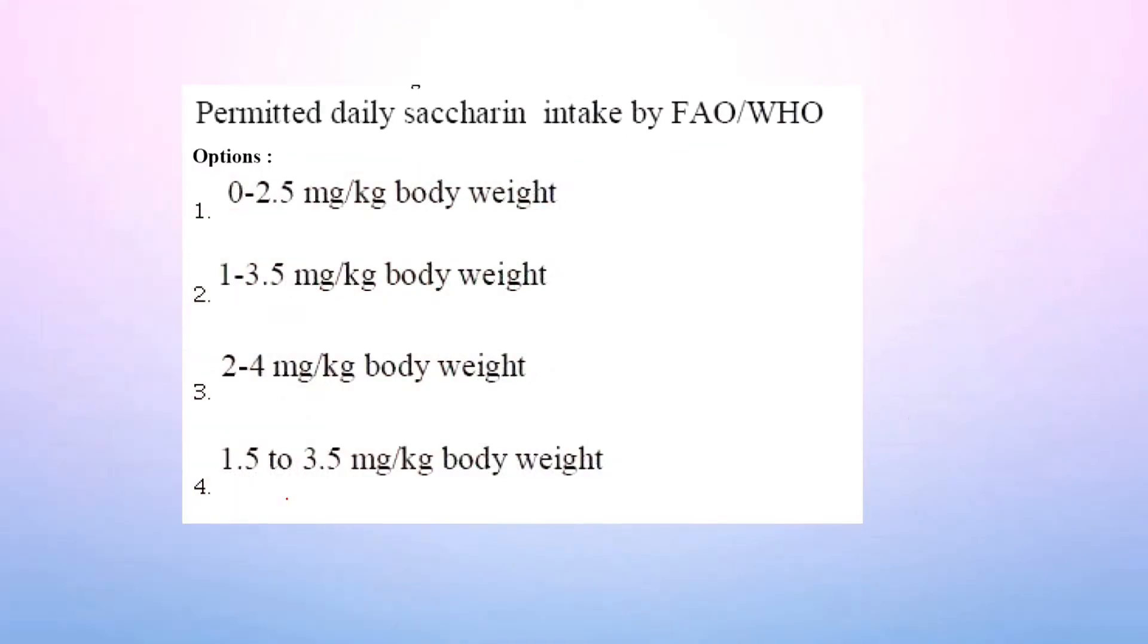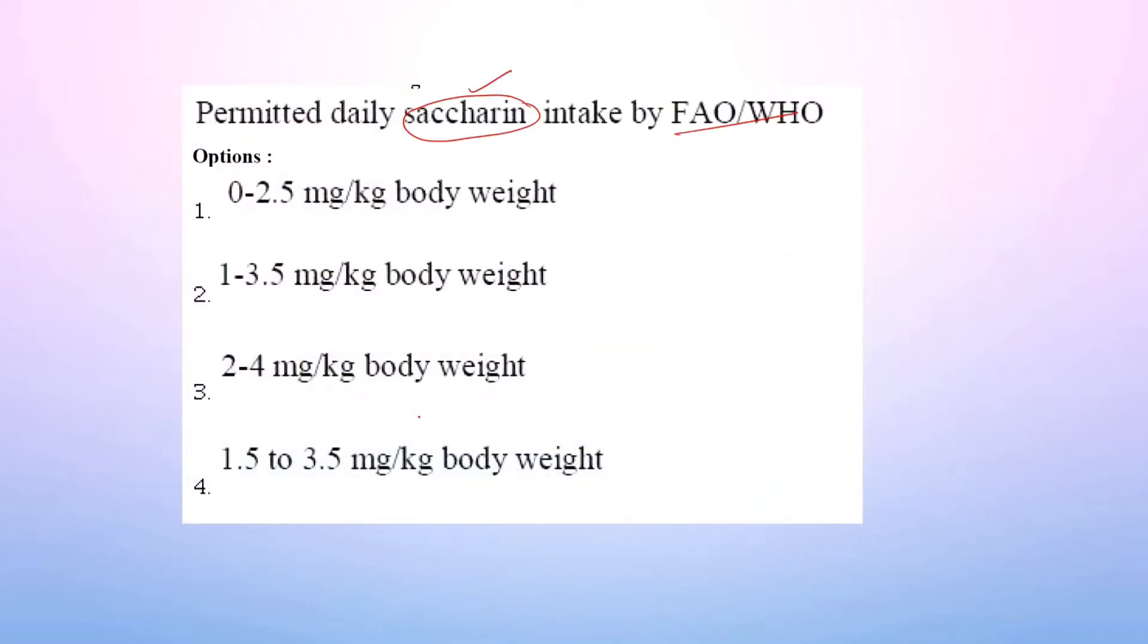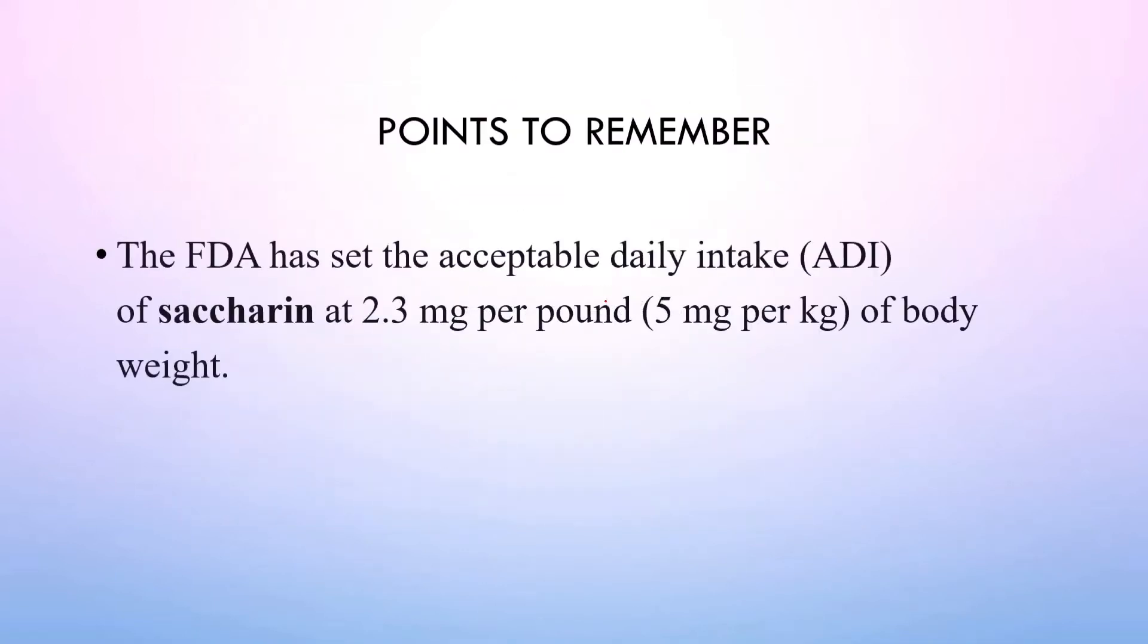Next question: Permitted daily saccharine intake by FAO or WHO. Saccharine is a type of sugar. Options: 0 to 2.5 mg per kg body weight, 1 to 3.5 mg per kg body weight, 2 to 4 mg per kg body weight, 1.5 to 3.5 mg per kg body weight. The correct option is option C, 2 to 4 mg per kg of body weight. Another memory-based question.